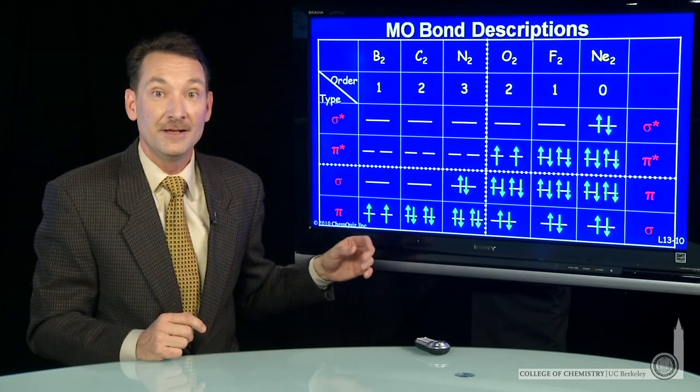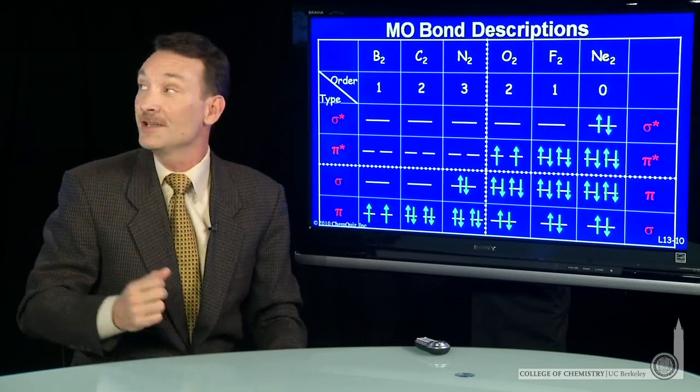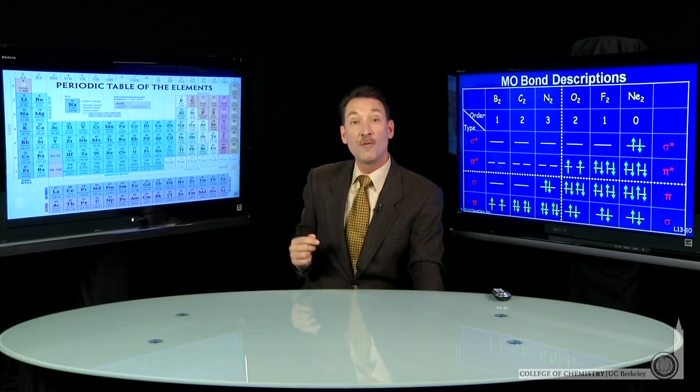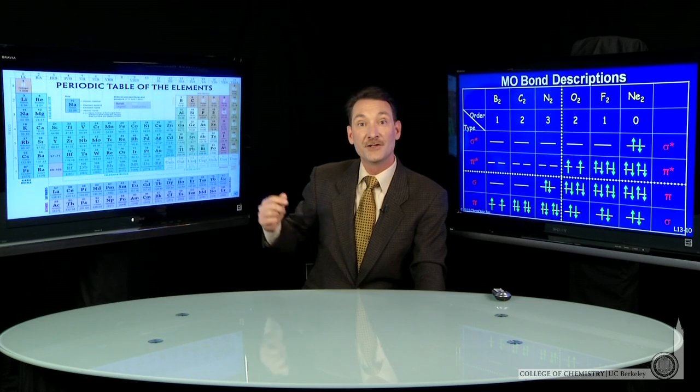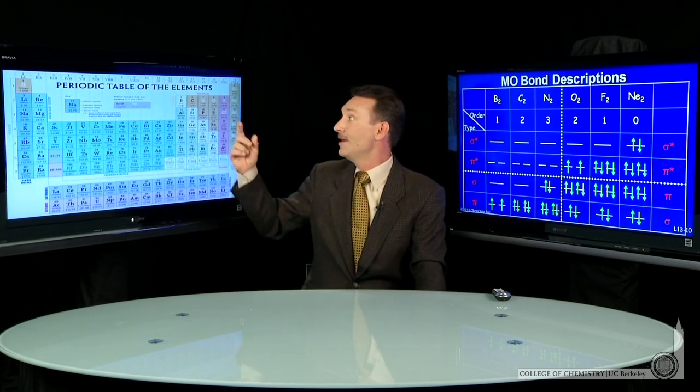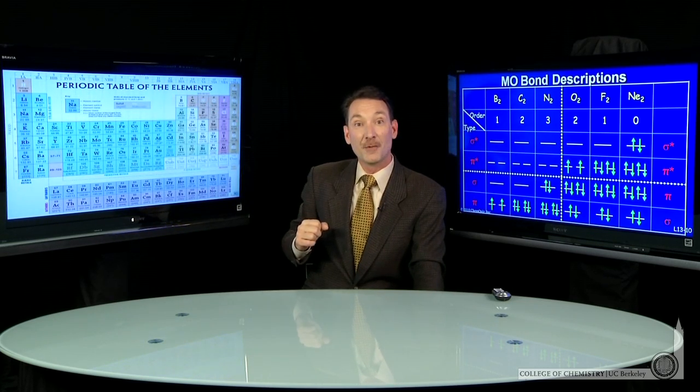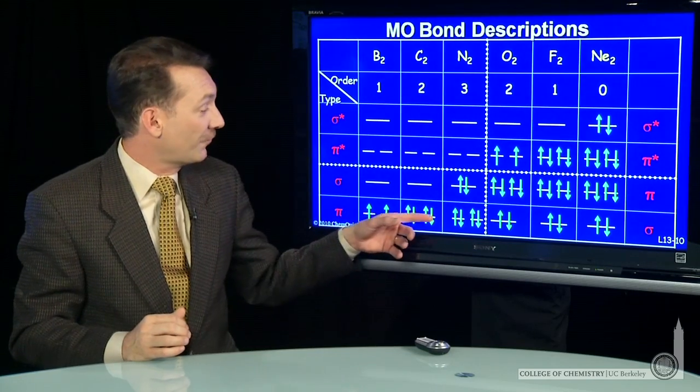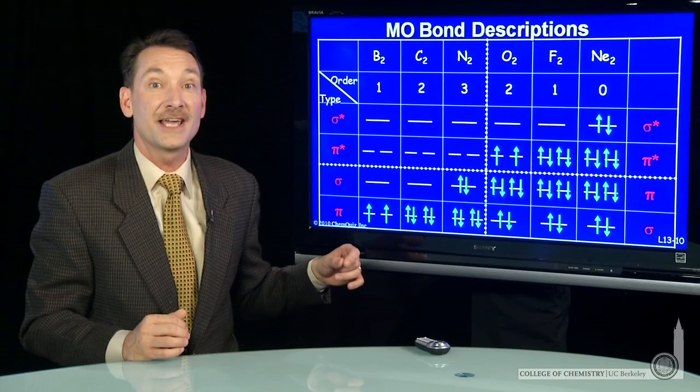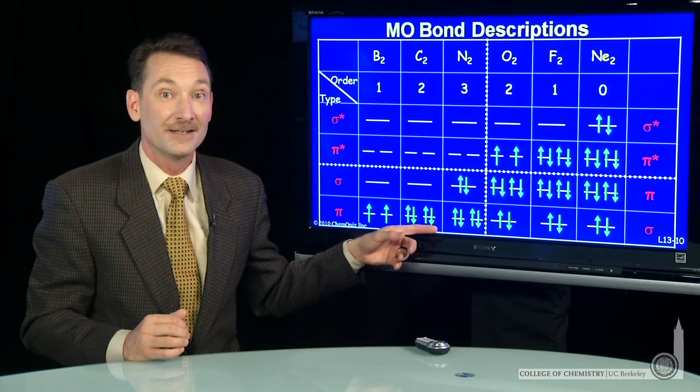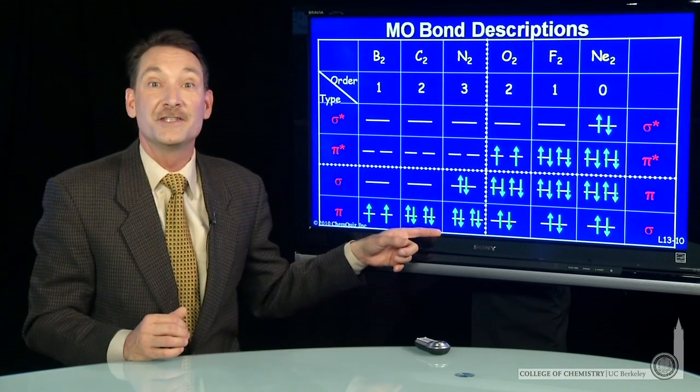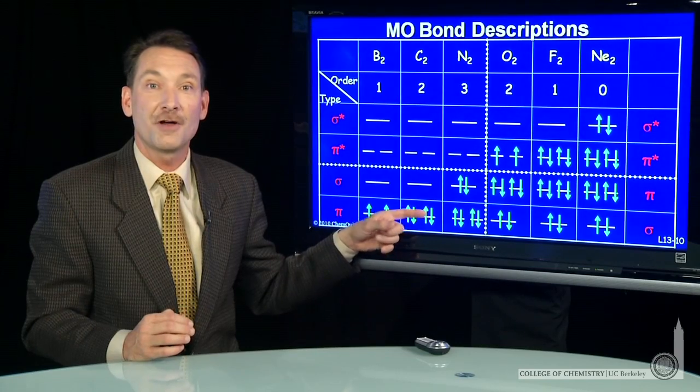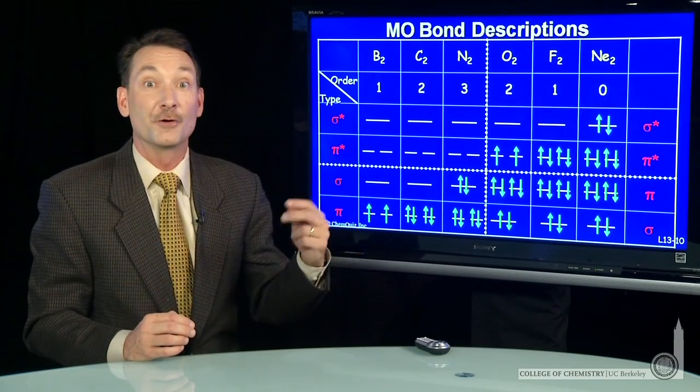We can do the same thing with carbon. Carbon has 2p electrons, one step over from boron. So I have 2p electrons from each carbon for a total of 4 going into my molecular orbitals. And when I put in 4 electrons to my molecular orbitals, I get a diamagnetic carbon molecule with a double bond. 4 bonding electrons divided by 2, bond order 2.